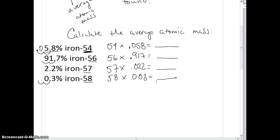So I've grabbed my calculator now, and I'm going to start doing these calculations. I've got 54 multiplied by 0.058, and I come up with an answer here of 3.132. I'll do the next one here, 56 multiplied by 0.917. I come up with an answer of 51.352. Next one, 57 multiplied by 0.022. I get 1.254, and the last one, 58 multiplied by 0.003, and I get an answer of 0.174.